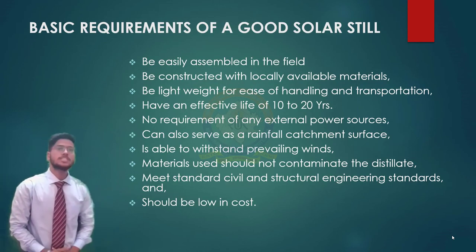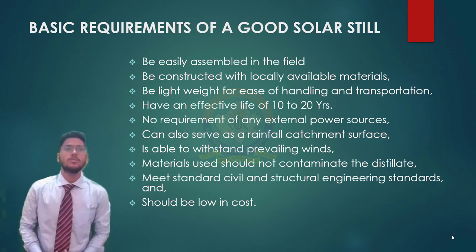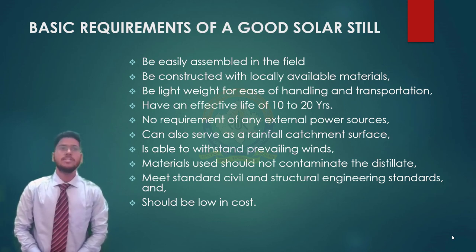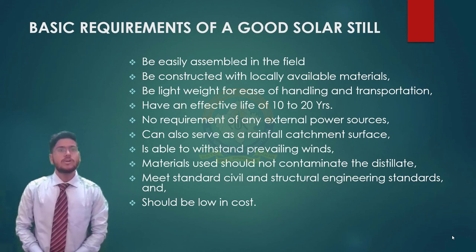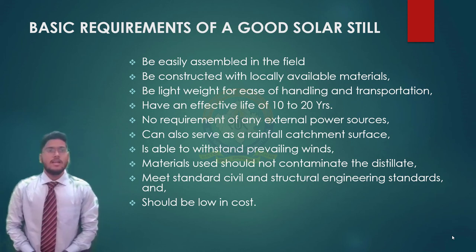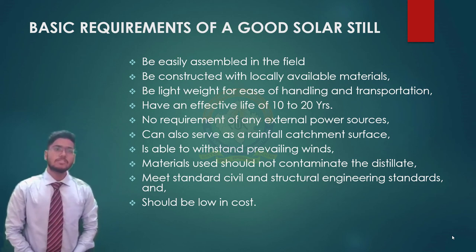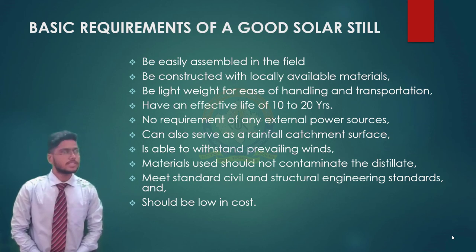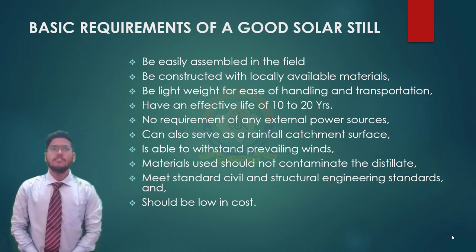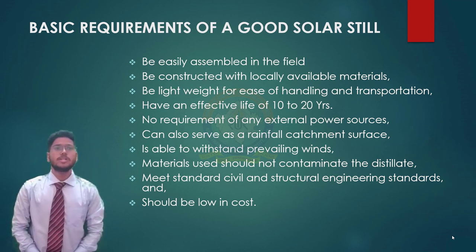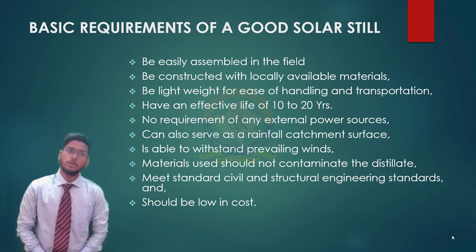Now we will discuss the requirements of a good solar still. A good still is needed so that it is easily assembled in the field, can be constructed with locally available materials, and is lightweight for ease of handling and transportation. It should have an effective life of 10 to 20 years, require no external power sources, and can also serve as a rainwater catchment surface. Additionally, it should be able to withstand prevailing winds, materials used should not contaminate the distillate, meet civil and structural engineering standards, and should be low in cost.